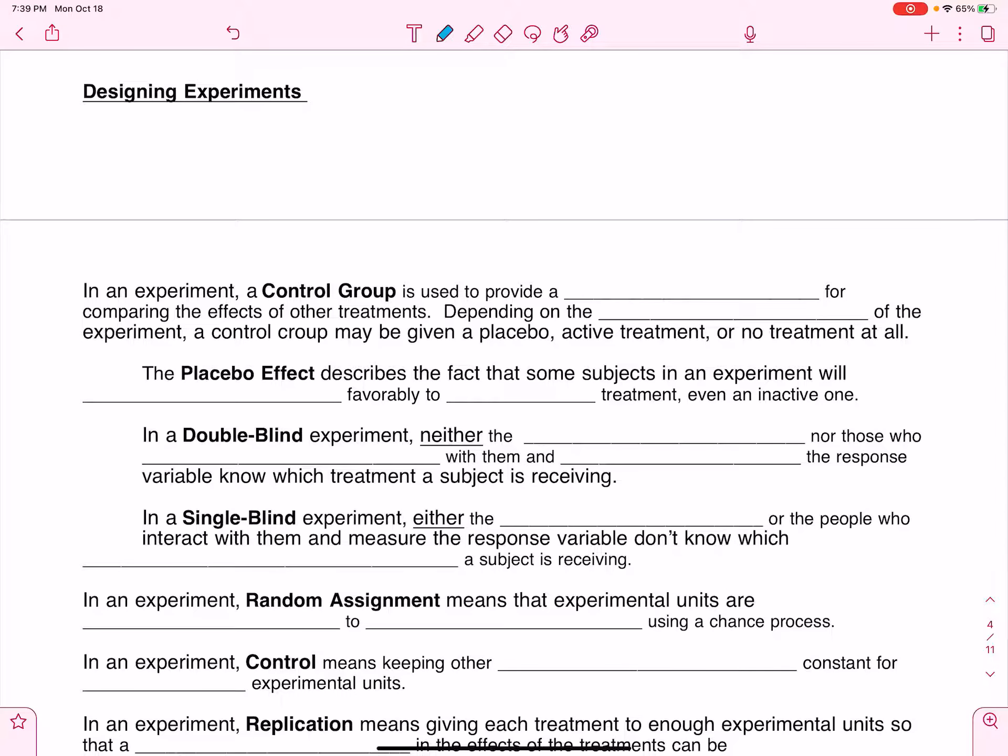AP Statistics. In this video, we are in Unit 3, and in the book, we are continuing Section 4.2. This is Designing Experiments. So, we're going to talk about how we design an experiment. There's lots of vocabulary.